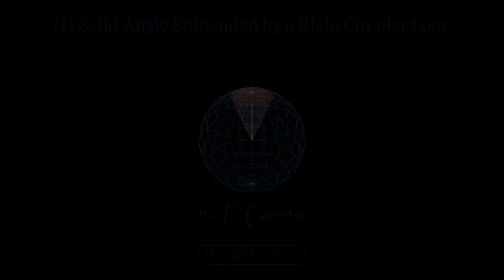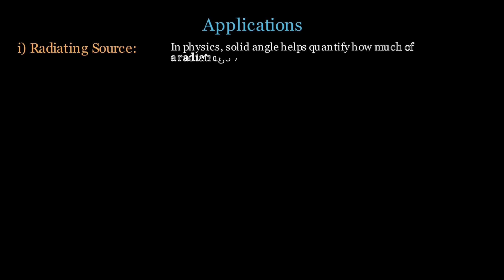Now, we are ready to explore some key applications of solid angles in physics. First, in radiation physics, solid angle helps quantify how much of a source's emission reaches a given region in space. Imagine a point source emitting uniformly in all directions, that is, over a total solid angle of 4 pi.